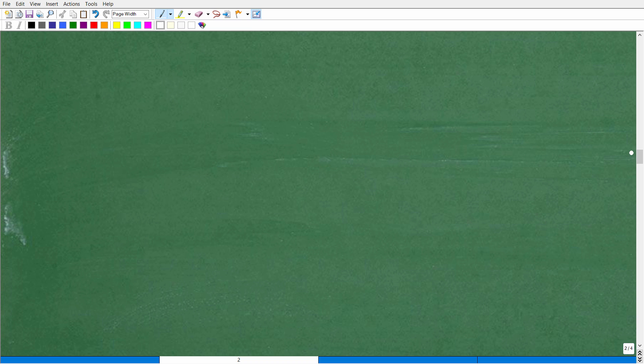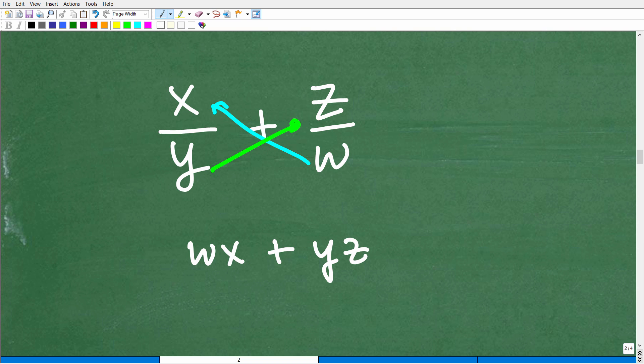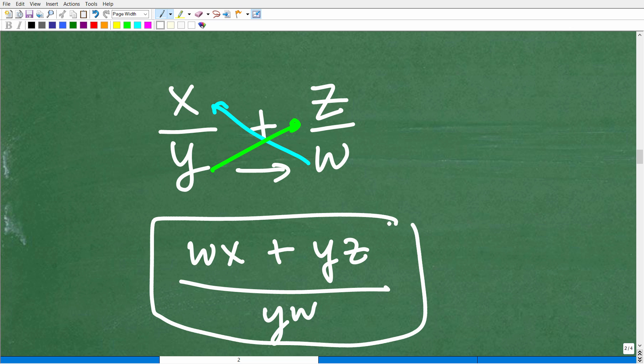For example, what if I had x/y plus z/w, and I said add these two fractions together? If you remember this bow tie method, w times x is wx in algebra, and I go this way: y times z is plus yz. So this is our numerator over y times w, which is yw as the denominator. Indeed, this is the correct answer.